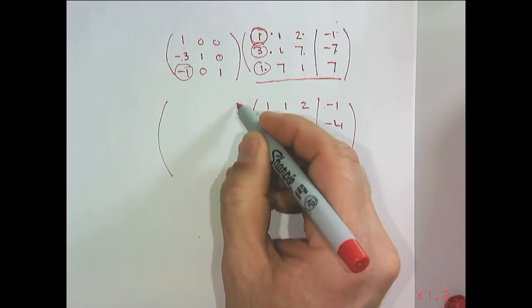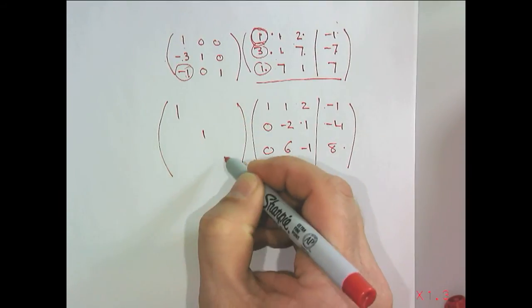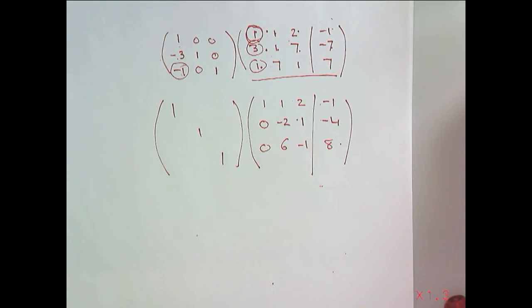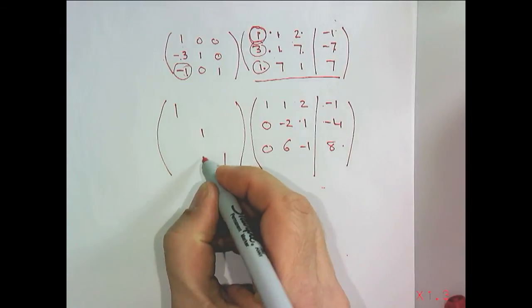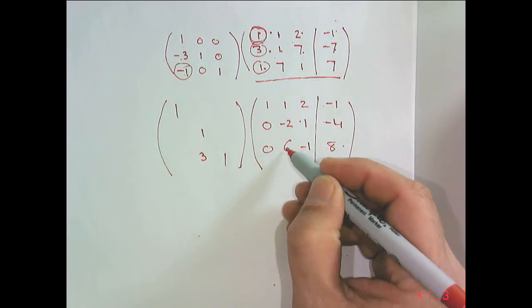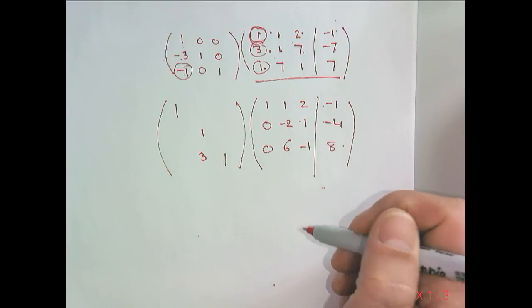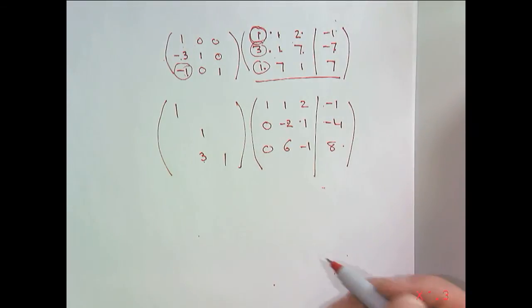And then you need a new Gauss transform, where again if you just have ones on the diagonal that's just the identity and nothing happens. But if you put the negative of the multiplier here, that's a 6 divided by minus 2 is minus 3, but you negate that you get 3.